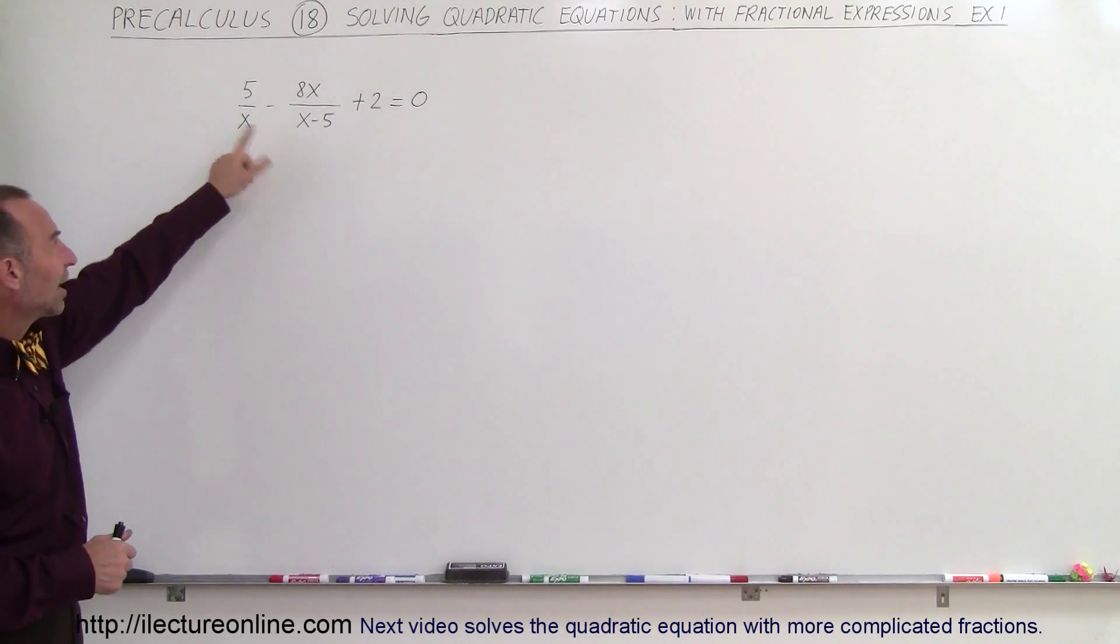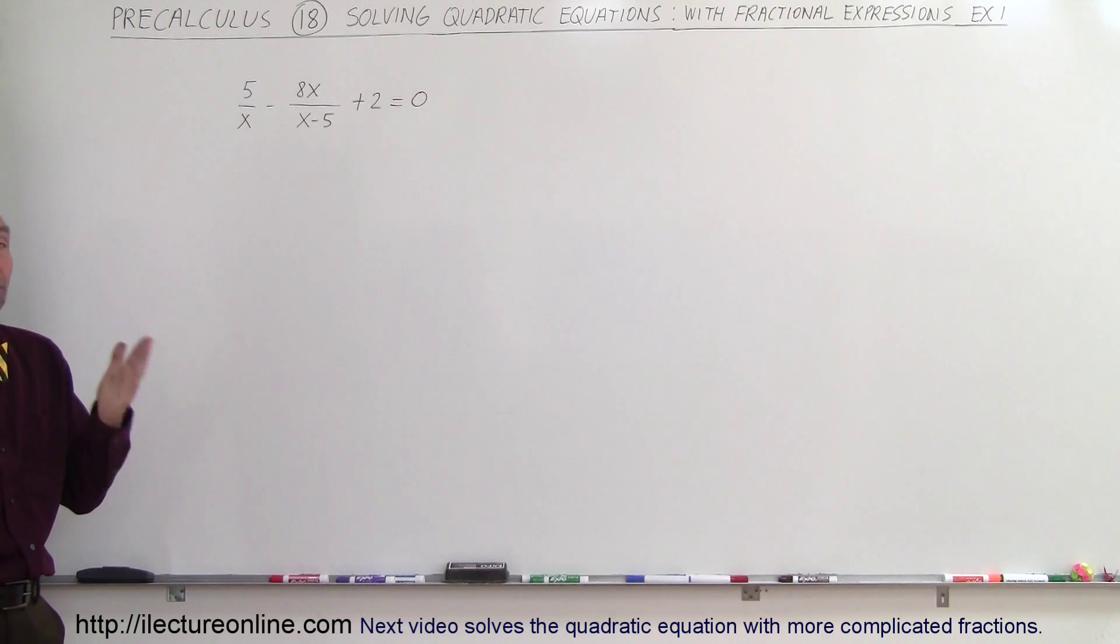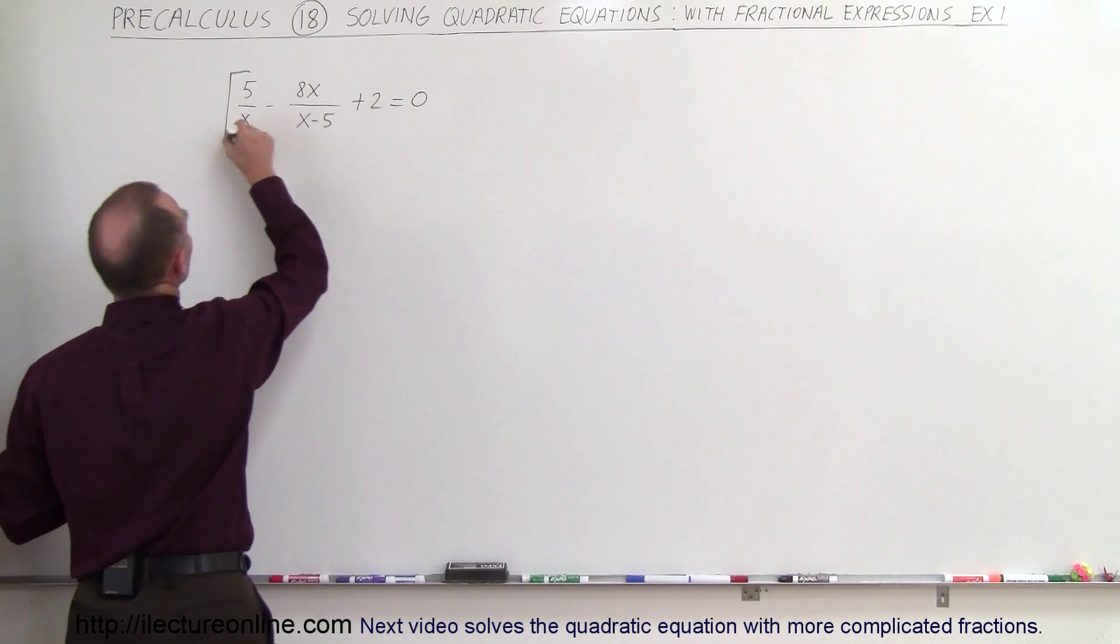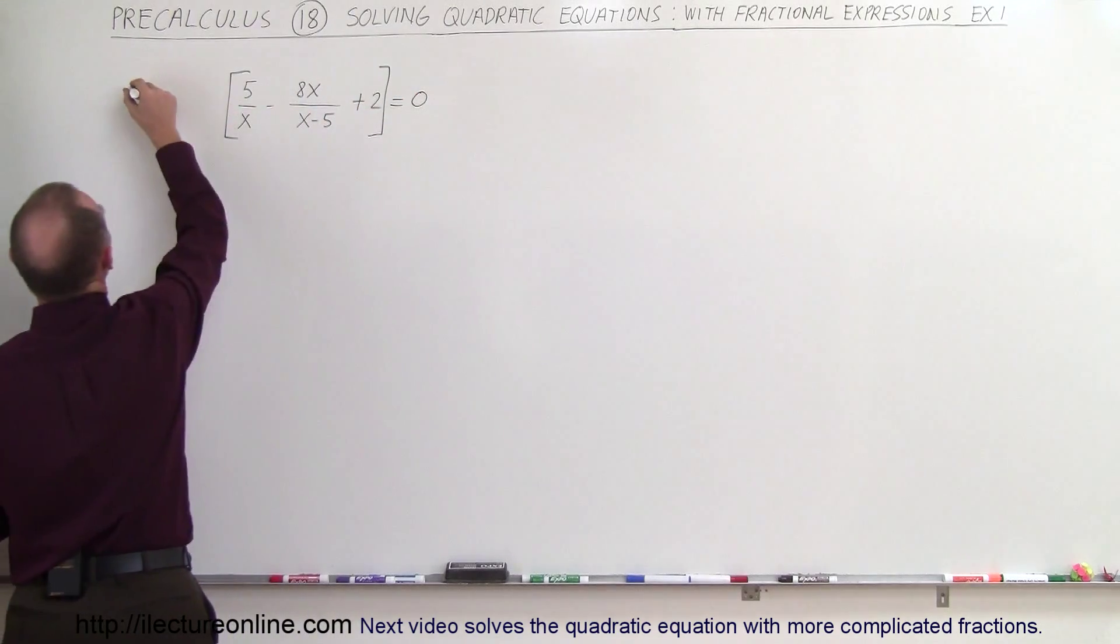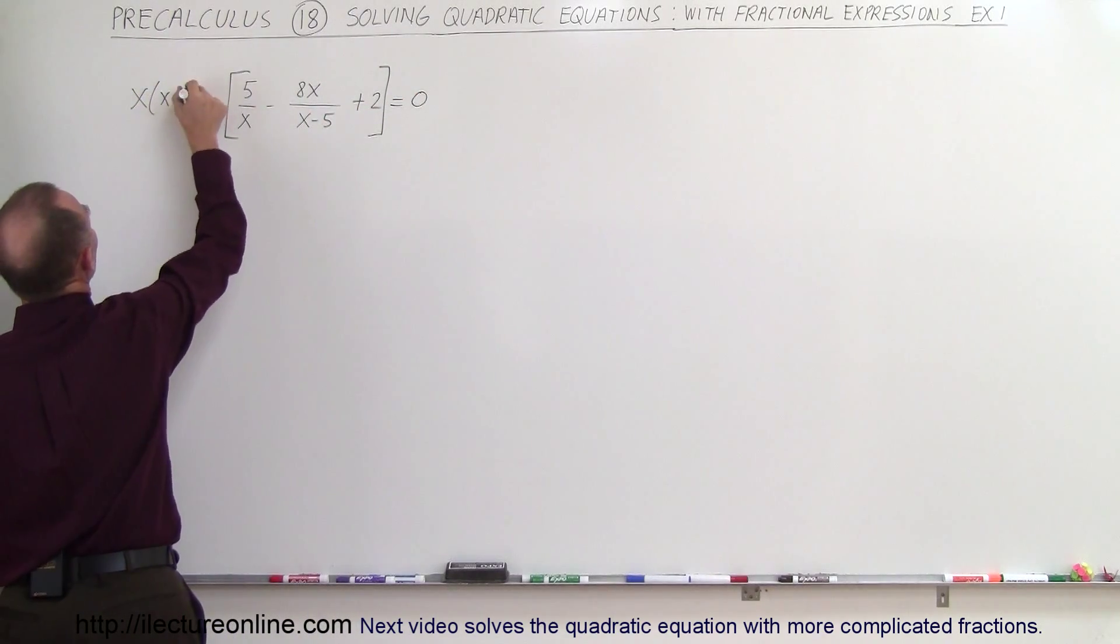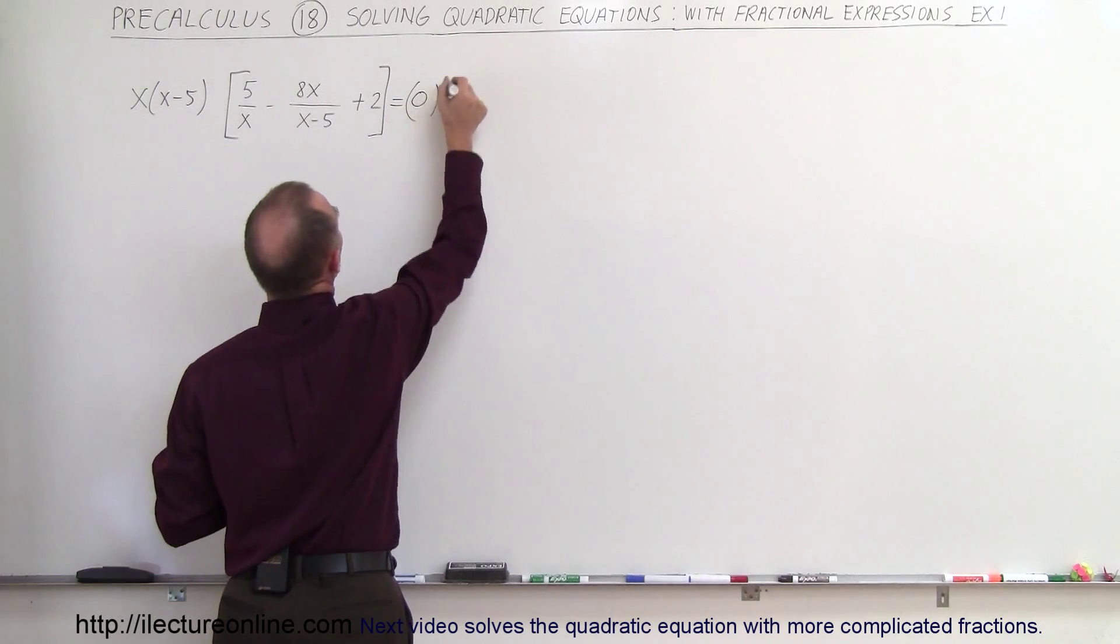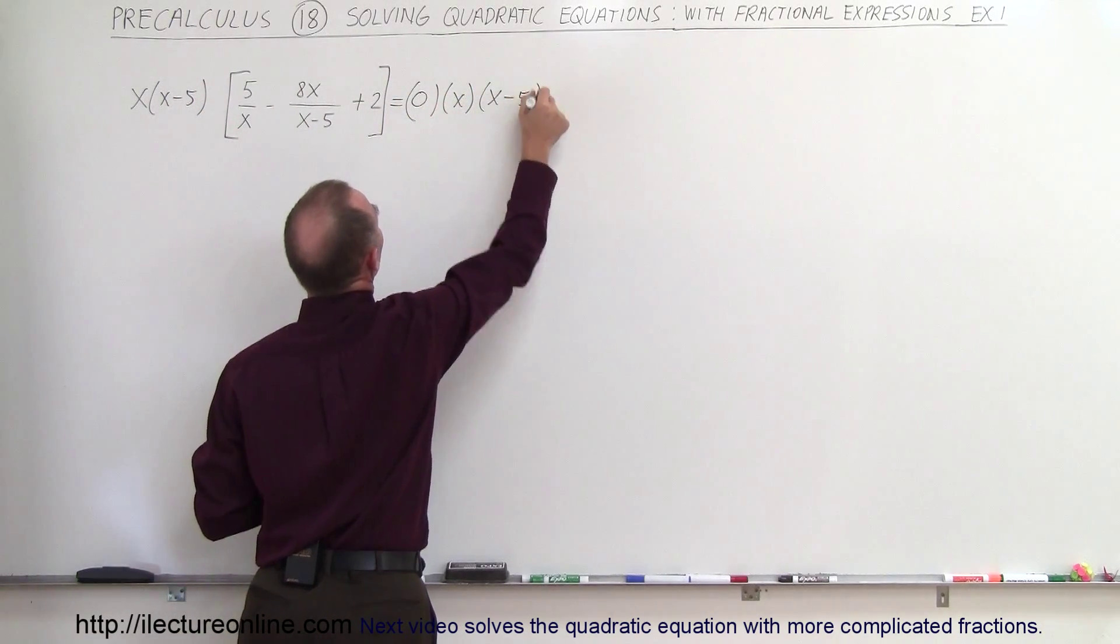Well, since we have fractions here, we want to get rid of the fractions by multiplying both sides of the equation by the lowest common denominator, which means we're going to multiply the left side equation by x times x minus 5, and of course we have to multiply the right side equation with x times x minus 5.